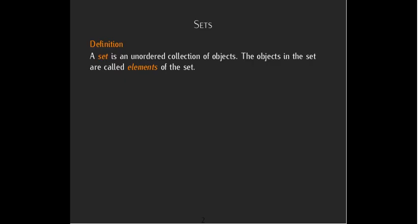A set is simply an unordered collection of objects. The objects are called elements. Unordered, of course, means that if you change the order, you still have the same set.